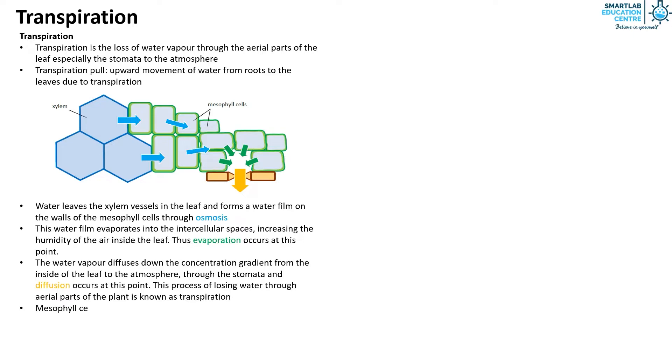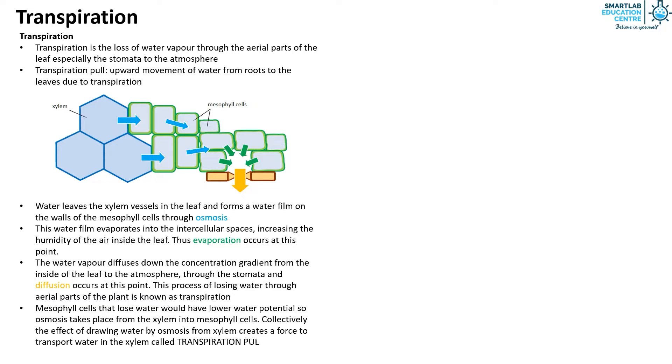Mesophyll cells that lose water would have a lower water potential, so osmosis takes place from the xylem into mesophyll cells. Collectively, the effect of drawing water by osmosis from xylem creates a force to transport water in the xylem called transpiration pull.